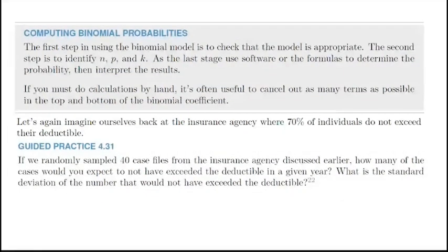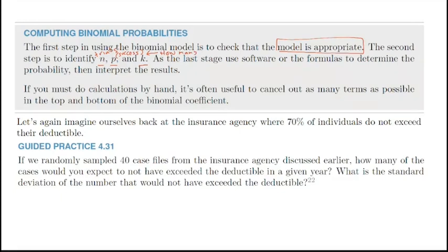The first step is always to make sure your model is appropriate — check the four conditions for the binomial distribution. Then identify your n (trials), your p (probability of success), and your k (how many successes out of your trials). Then we'll use software or the formulas to determine our answers.